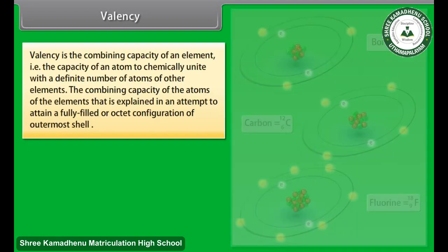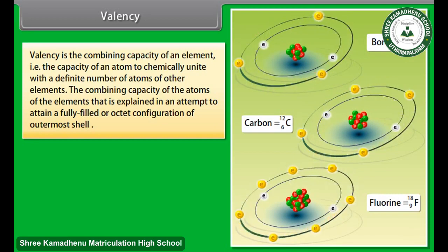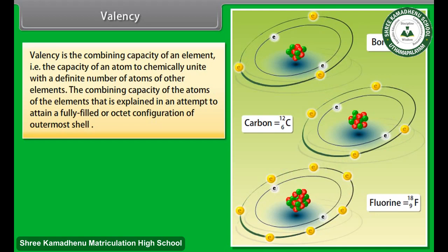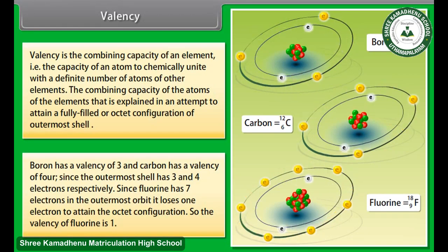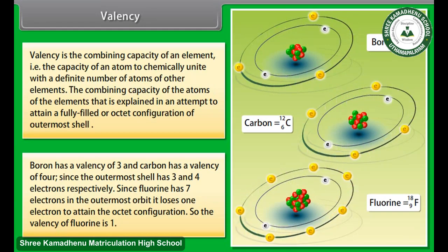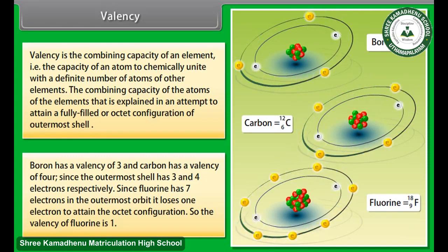Valency. Valency is the combining capacity of an element, that is, the capacity of an atom to chemically unite with a definite number of atoms of other elements. The combining capacity of the atoms of the elements is explained in an attempt to attain a fully filled or octet configuration of outermost shell. Boron has a valency of 3, and carbon has a valency of 4, since the outermost shell has 3 and 4 electrons respectively. Since fluorine has 7 electrons in the outermost orbit, it loses 1 electron to attain the octet configuration. So, the valency of fluorine is 1.